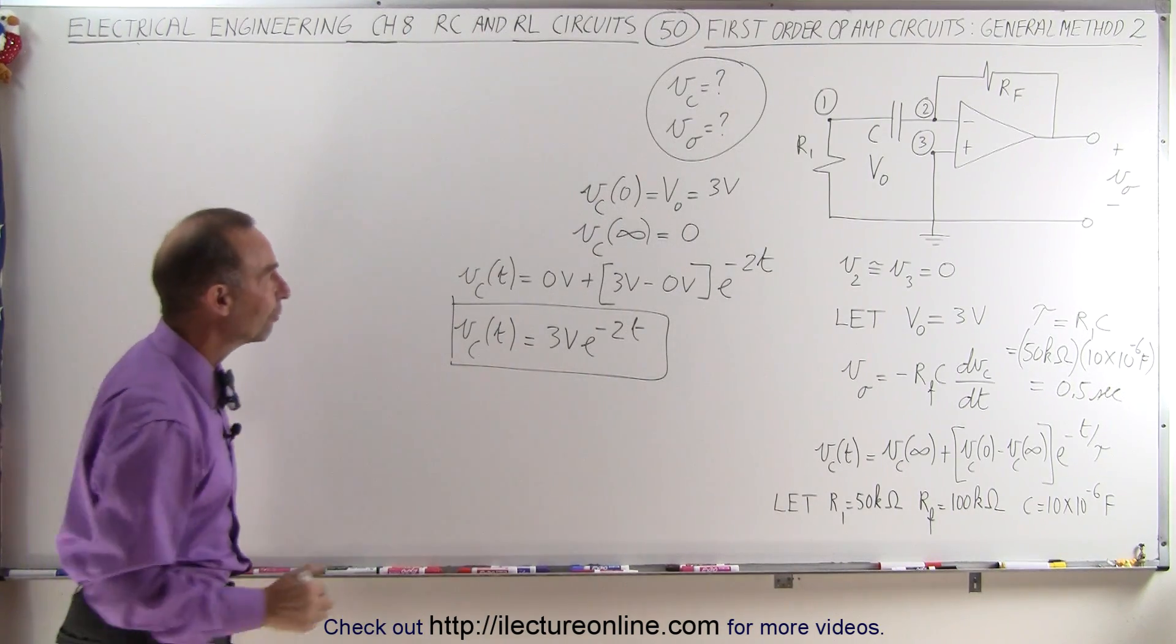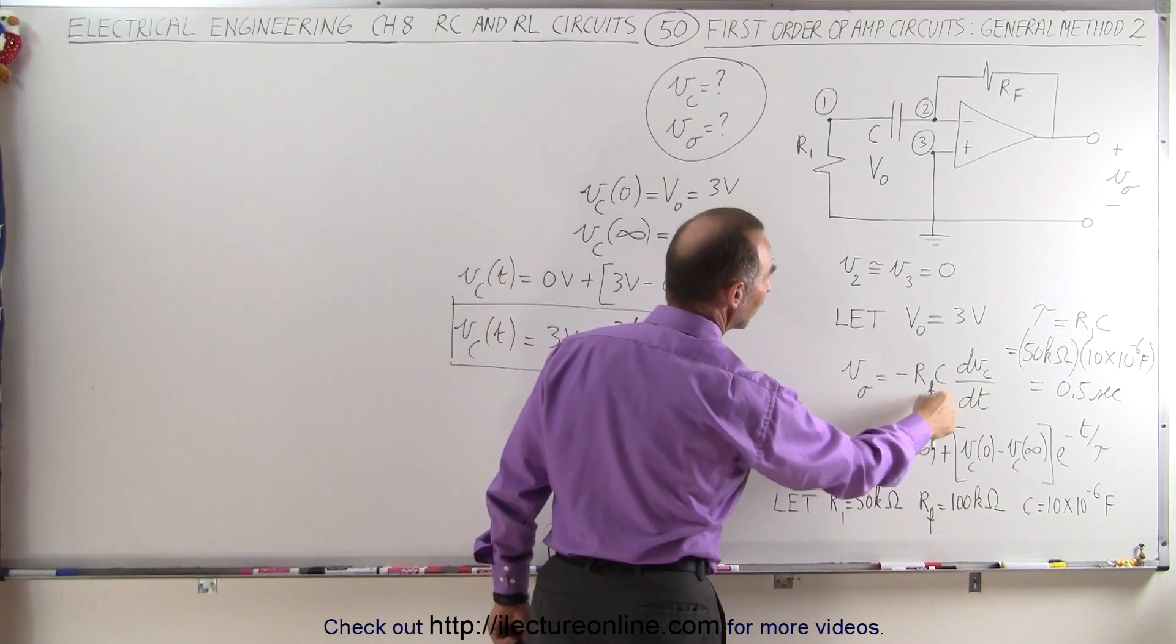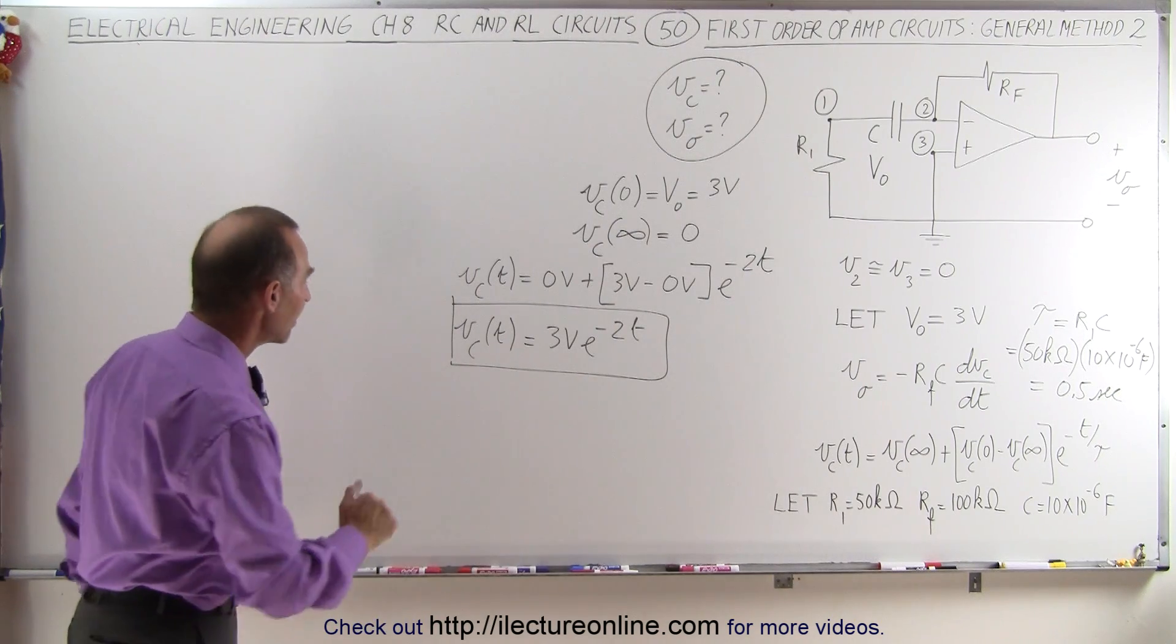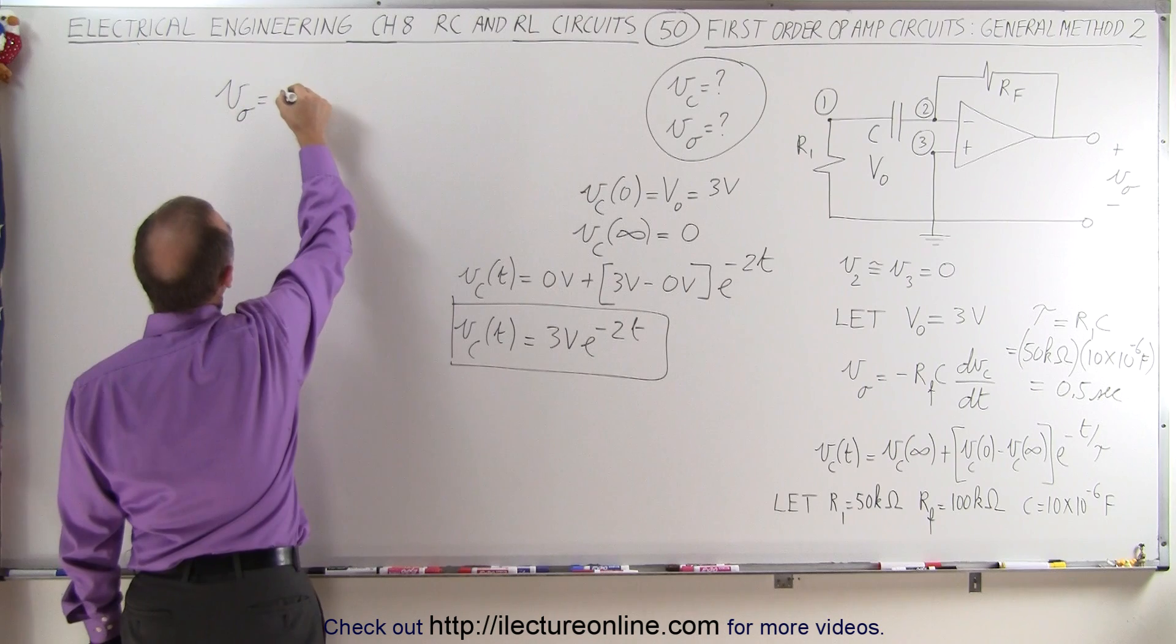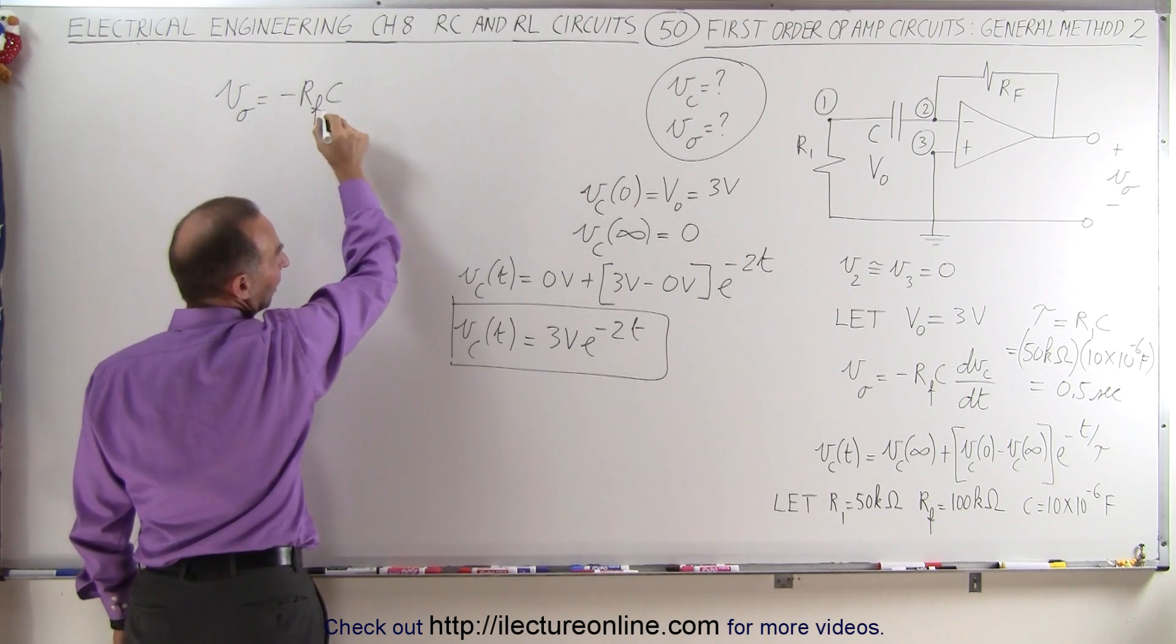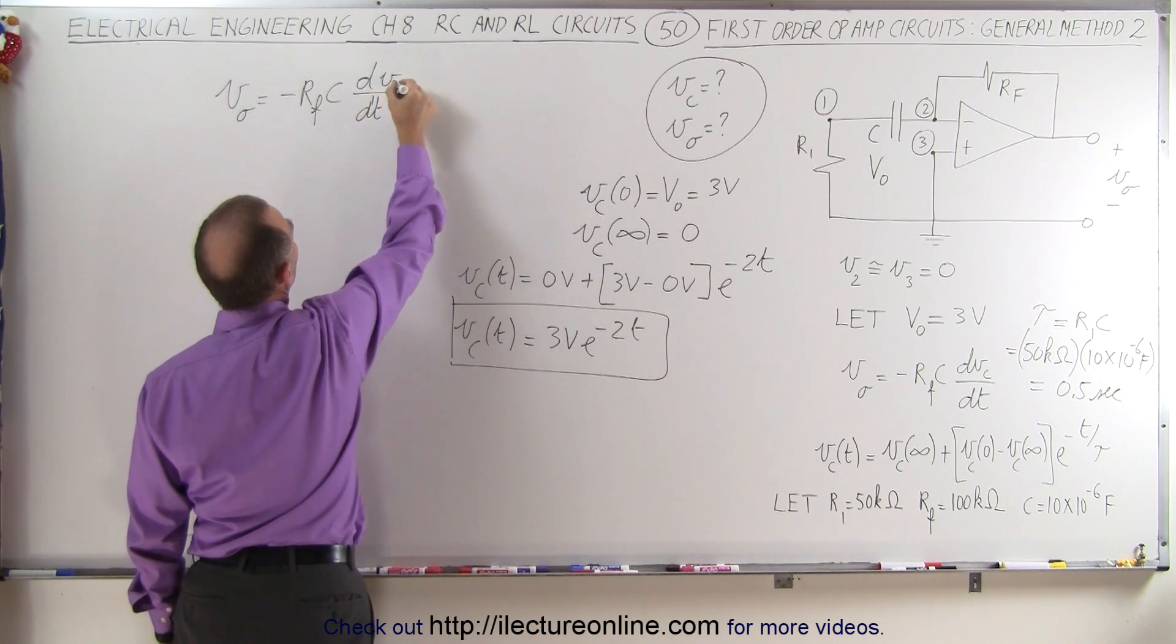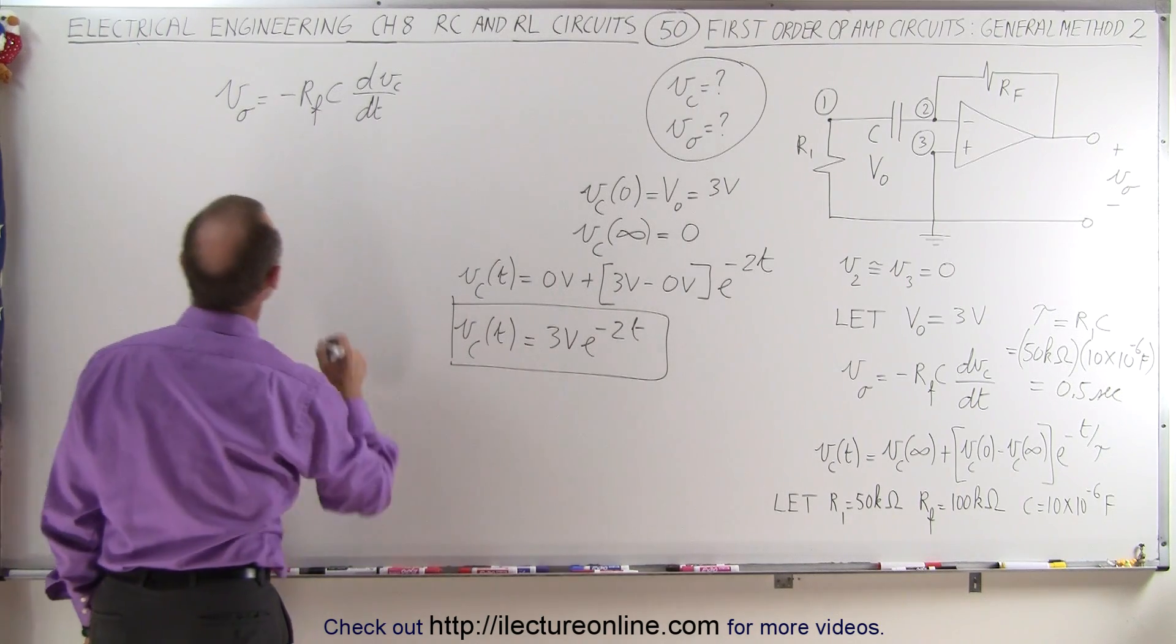And now we do the same technique as before to find the output voltage. That's going to be equal to minus Rf times C times the change in the voltage across the capacitor with respect to time. So we can say that V₀ is equal to minus the feedback resistor times the capacitance times dV/dt, V being the voltage across the capacitor, and of course that's what we have defined right here.